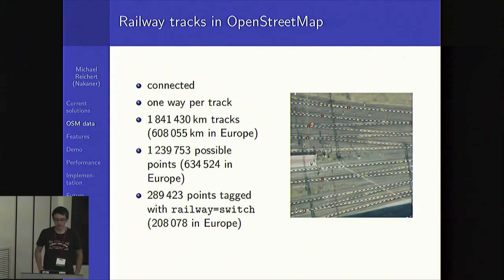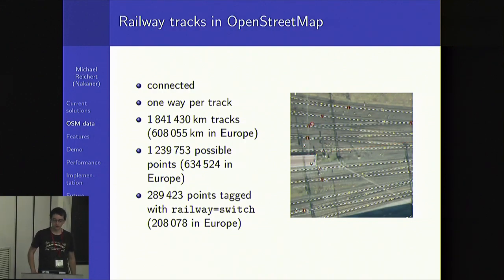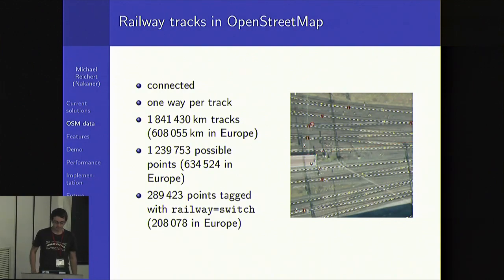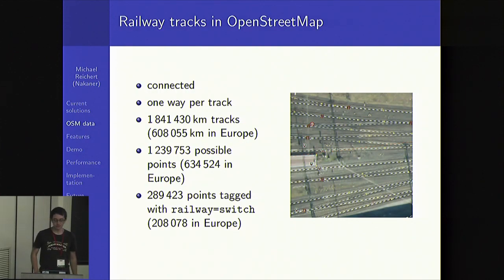Now about the railway data in OpenStreetMap. The railway tracks are connected, so you can do routing on them. There's usually one way per track, except in areas which are not mapped very well — then you have a tracks=2 tag on the track if there are two tracks for one way in OpenStreetMap. There are currently 1.8 million kilometers of tracks in the whole world, a little bit more than 600,000 kilometers in Europe. There are 1.2 million possible switch points in the world and more than 600,000 in Europe. Only 290,000 of them are tagged as railway switch in the whole world.